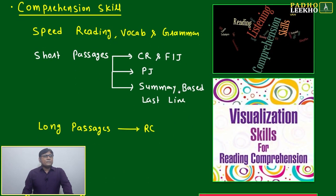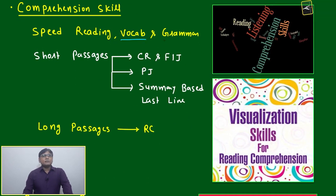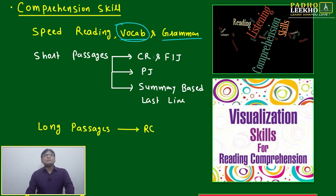Next is your comprehension skill: speed reading, vocab, grammar. Overall, vocab is the root - everything has come afterwards. If you're having good vocab, like many people in India, automatically your grammar will develop, your speed reading will develop, everything will develop.